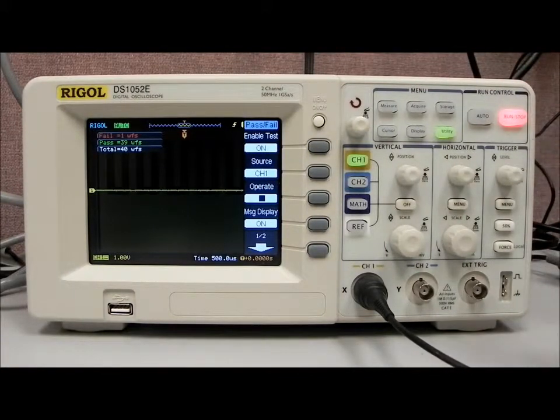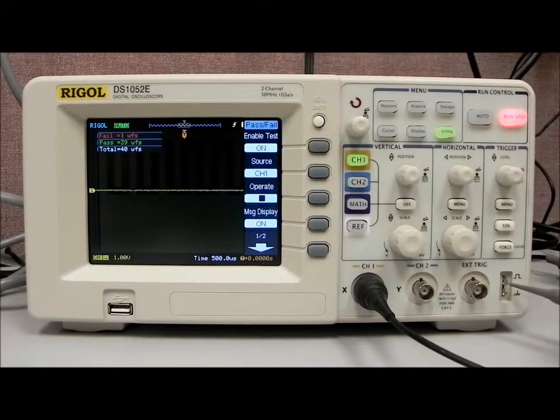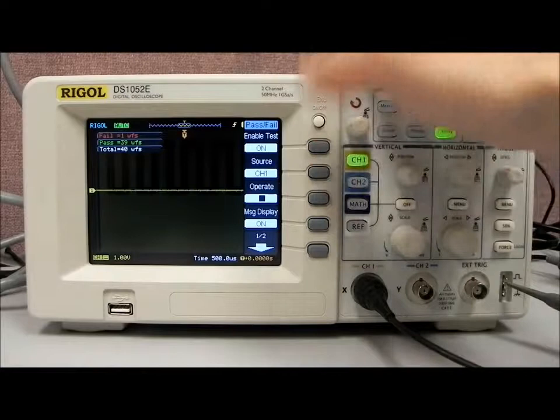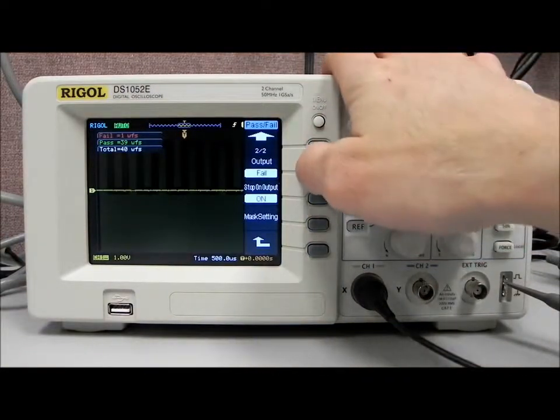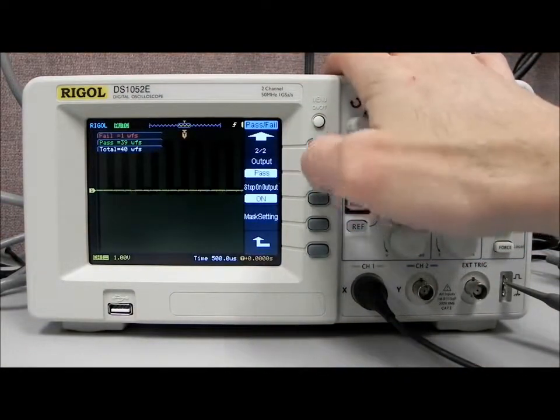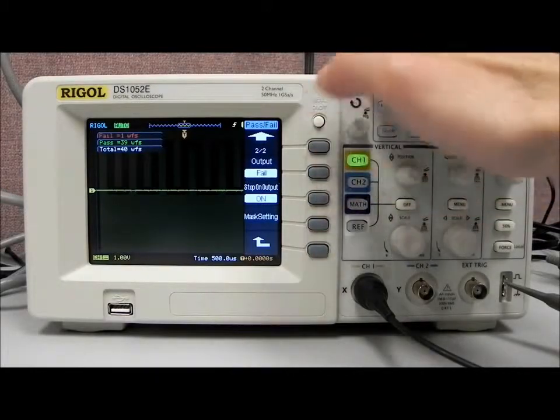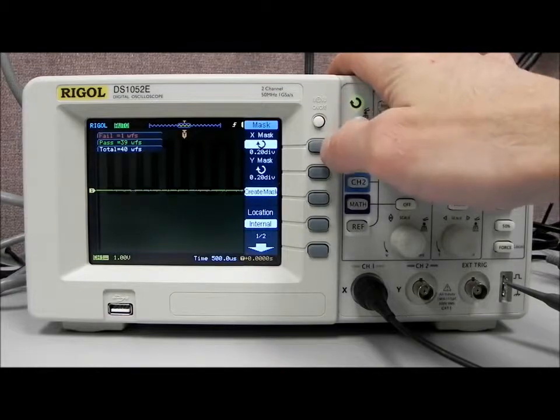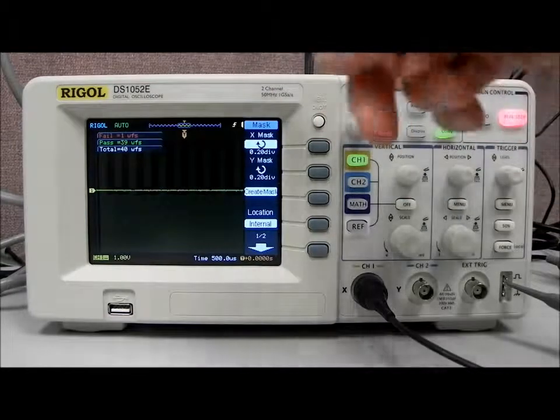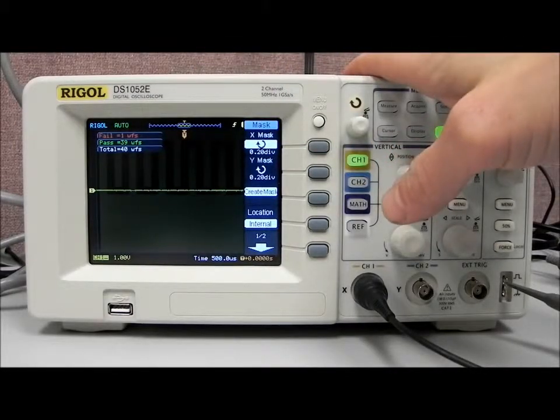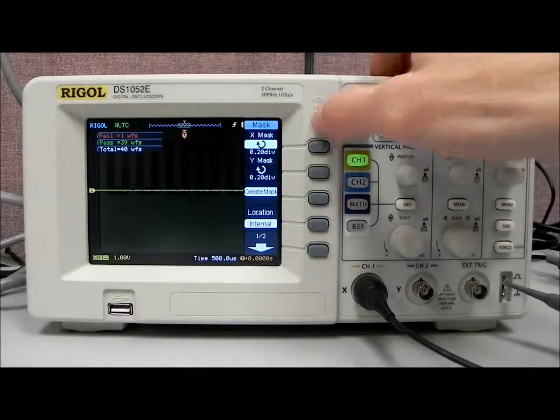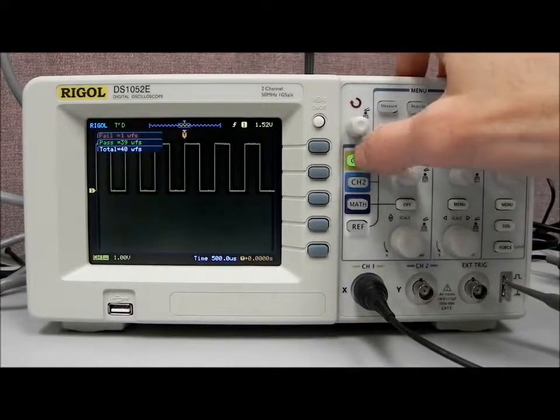It's also, through the output on the back of the instrument, it's also disabled or sent a failed signal. We've configured it to do that by using the output fail, and then we can also do an output on pass if we'd like. So very flexible. You can set up the scope to run for a long period of time, and you can check to see the number of waveforms that have passed or failed over a given period of time, which can be useful for troubleshooting some problematic signals.